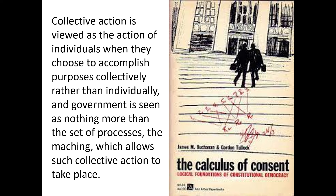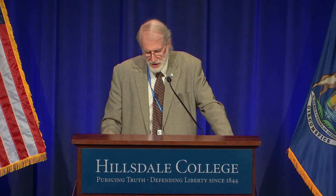Buchanan envisioned government as a mechanism that ideally enabled people to accomplish collectively ends that they could not accomplish individually. In the Calculus of Consent, co-authored with Gordon Tullock, they say: collective action is viewed as the action of individuals when they choose to accomplish their purposes collectively rather than individually. Government is seen as nothing more than the set of processes, the machine which allows such collective action to take place. Buchanan thought that the United States government did a tolerably good job of living up to this ideal, although throughout his career he became increasingly dissatisfied with the direction in which American society and American government was headed.